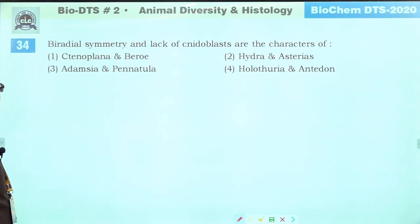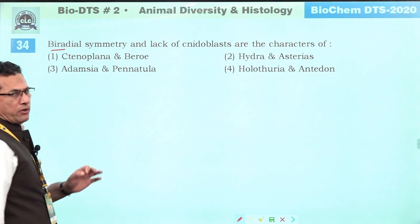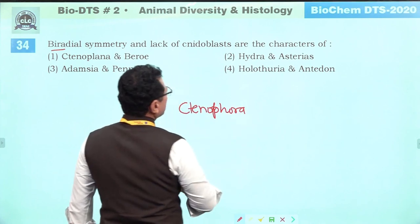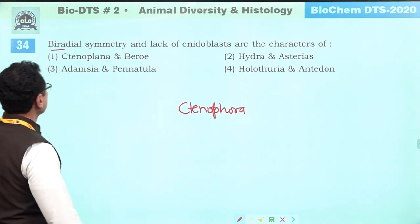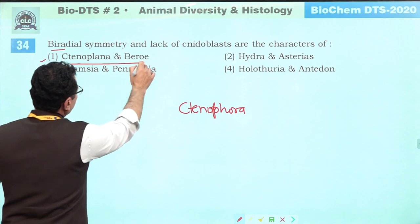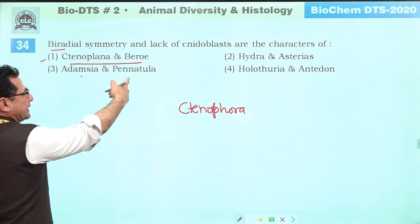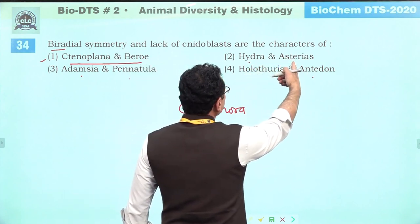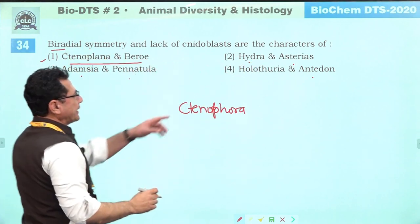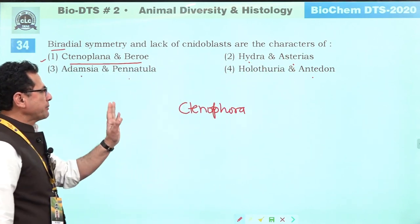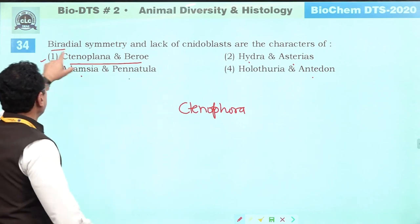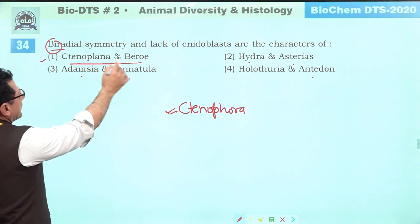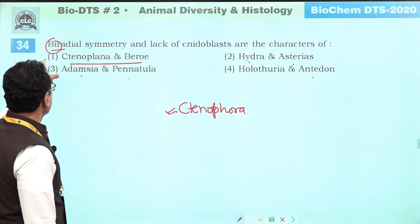Biradial symmetry is found only in phylum Ctenophora. Echinoderms have pentamerous radial symmetry, which is different from biradial. We are asking specifically about biradial symmetry. So biradial symmetry is a feature of phylum Ctenophora, and both examples are members of this phylum. Answer is one.